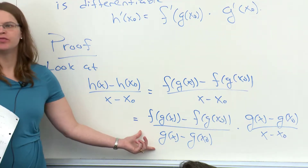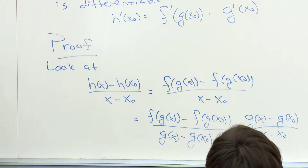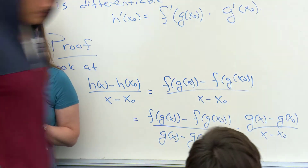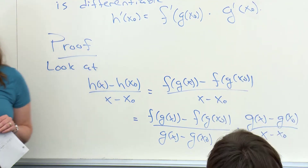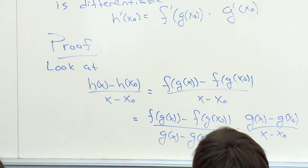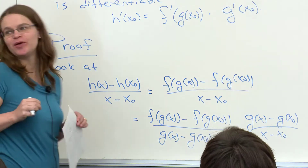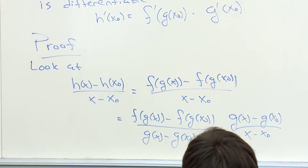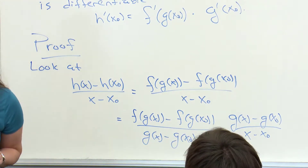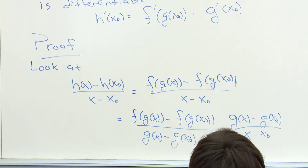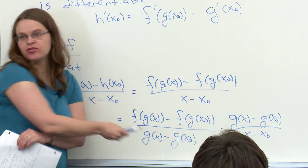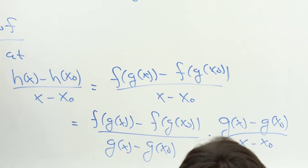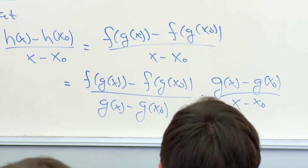The first term looks like a derivative of f and the second term looks like a derivative of g. But what's the problem? This works only as long as g(x) is not equal to g(x₀). There is danger that we could be dividing by zero — for instance, if g is constant or locally constant, or it oscillates and returns to the same value.